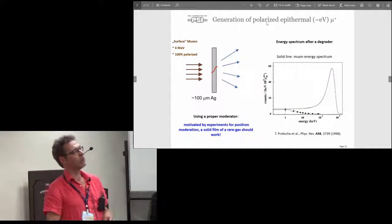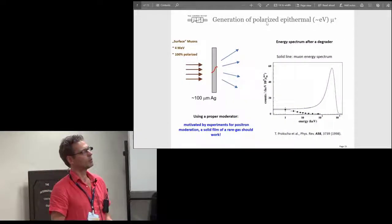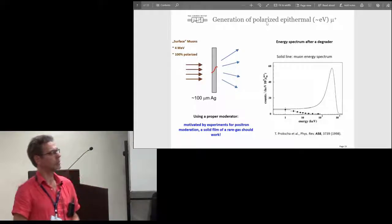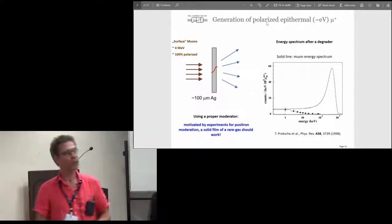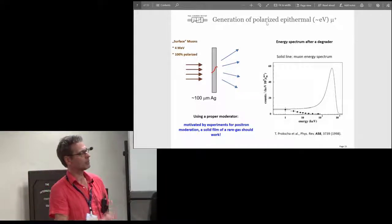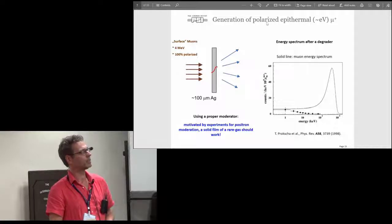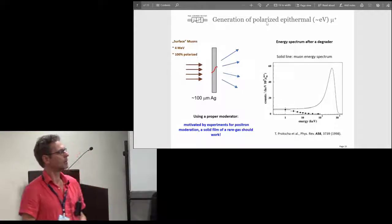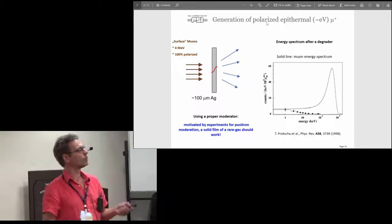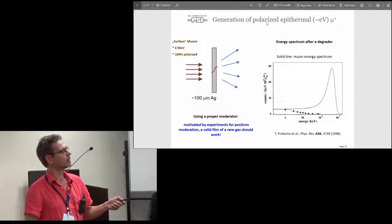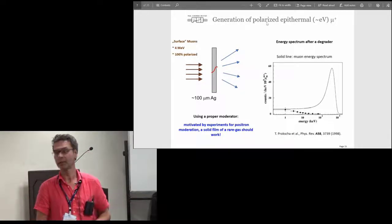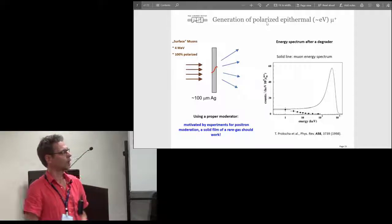A relatively new development in the past 20 years was the generation of low energy muon beams in the kiloelectron volt range. I will present here the method that we are using at PSI. This is using a proper moderator to convert this 4 MeV beam into an electron volt beam.